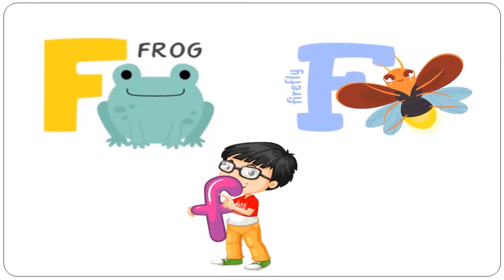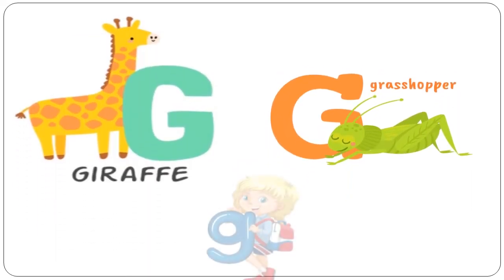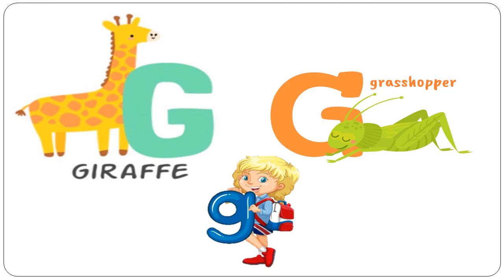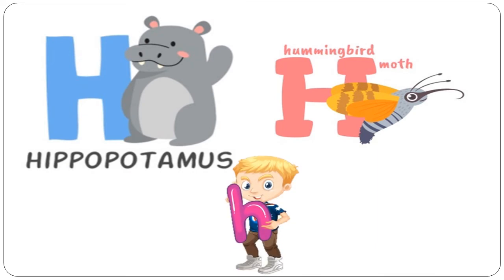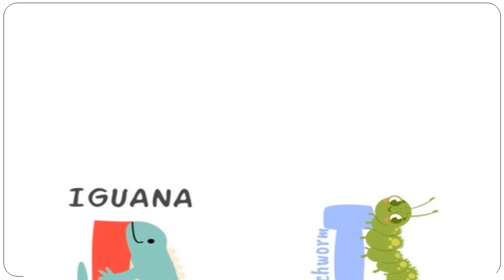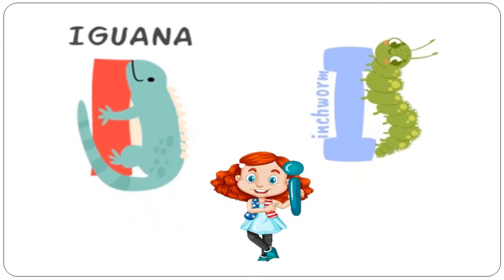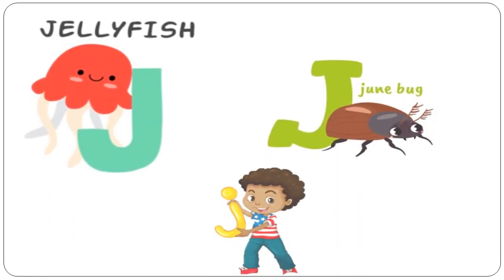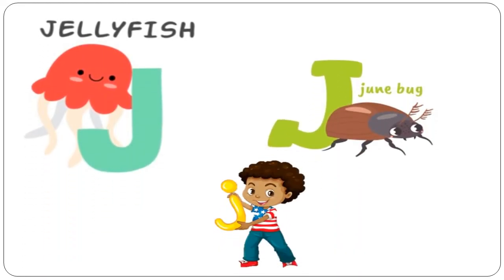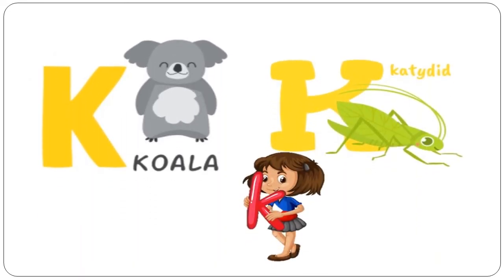F is for Frog. F is for Firefly. G is for Giraffe. G is for Grasshopper. H is for Hippopotamus. H is for Hummingbird Moth. I is for Iguana. I is for Inchworm. J is for Jellyfish. J is for Junebug. K is for Koala. K is for Katydid.